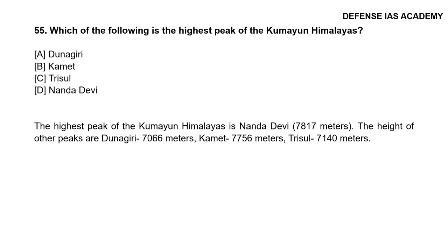Question 55: Which of the following is the highest peak of the Kumaon Himalayas? The correct answer is option D, Nanda Devi. The highest peak of the Kumaon Himalayas is Nanda Devi at 7,817 meters. Other peaks include Dunagiri at 7,066 meters, Kamet at 7,756 meters and Trishul at 7,140 meters.